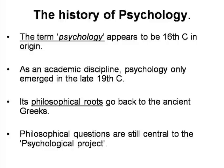The term psychology — psychologia — appears to have first been used in the 16th century by the Dalmatian humanist Marko Marulic, but it wasn't until the late 19th century that the modern science of psychology emerged. Although not labelled psychology, psychological interests and questions in the Western intellectual tradition date back to the ancient Greeks.